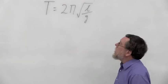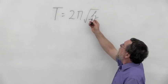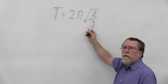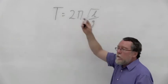That goes T equals 2π square root of the length over g, where g is the acceleration due to gravity. So as long as we know g, we can calculate the period of the pendulum.